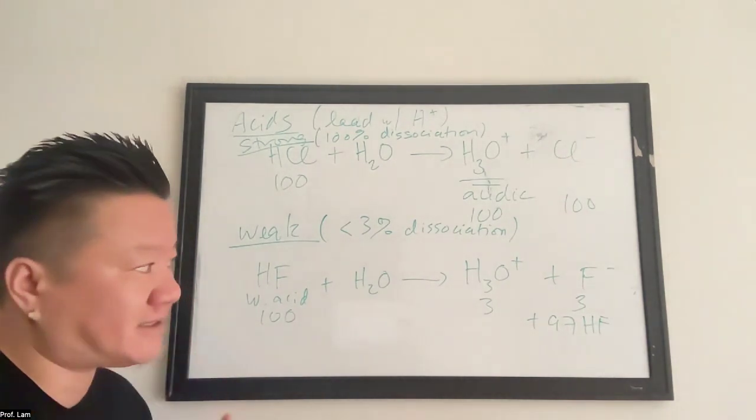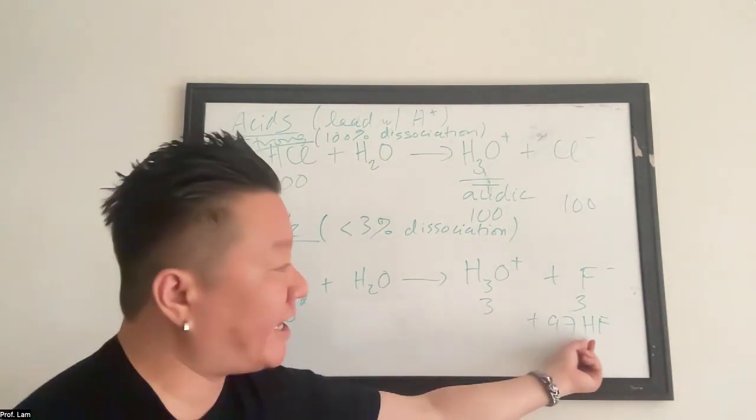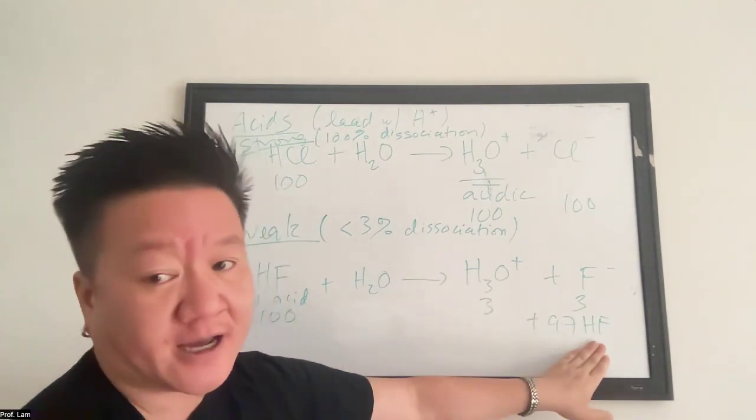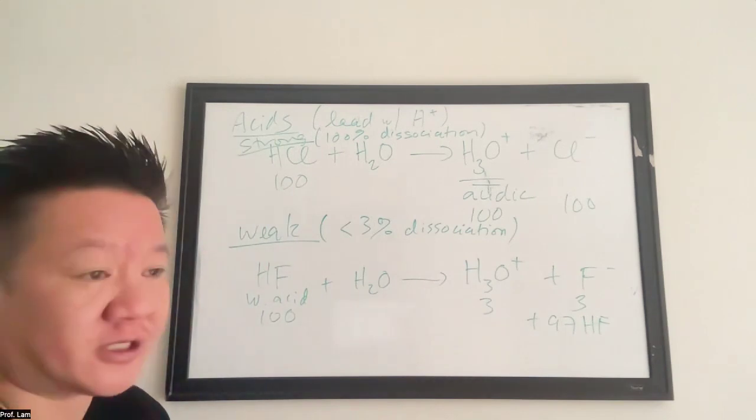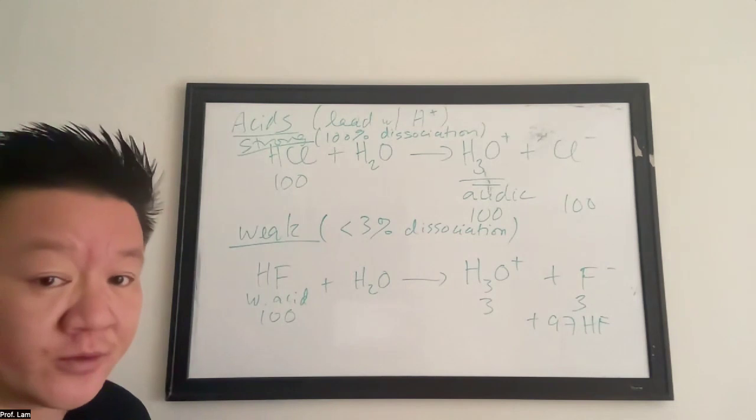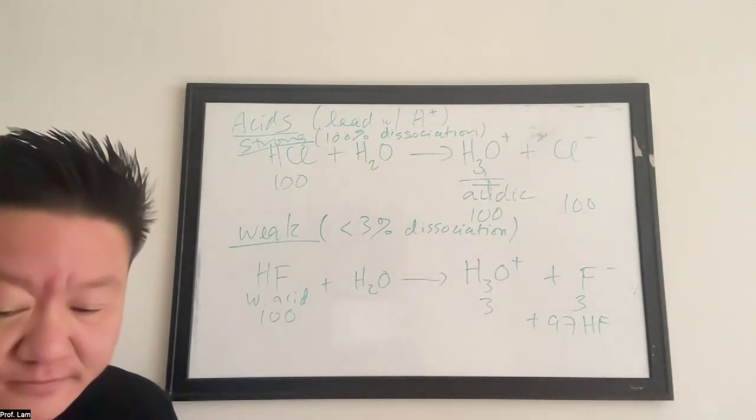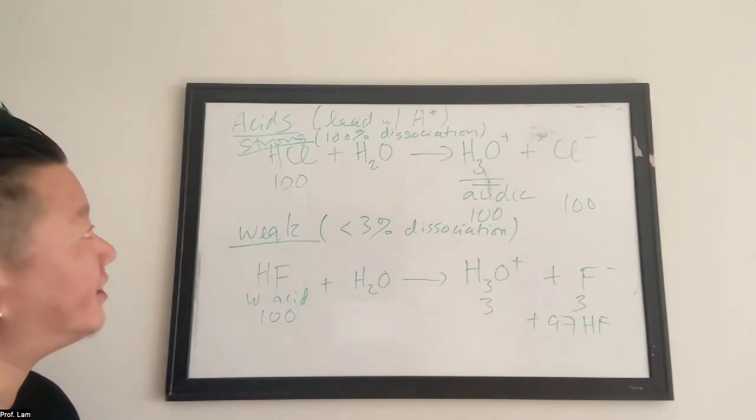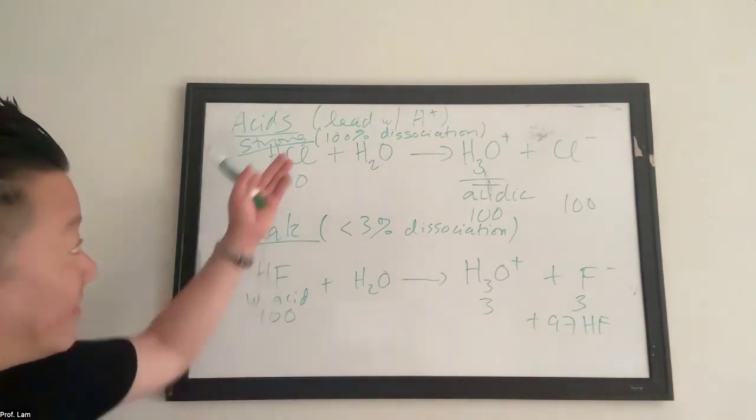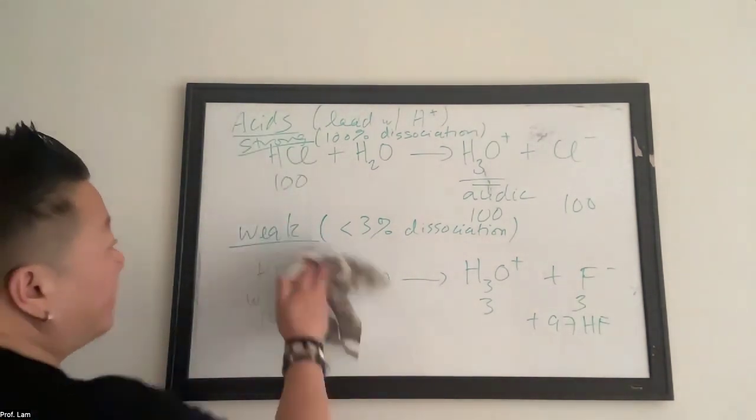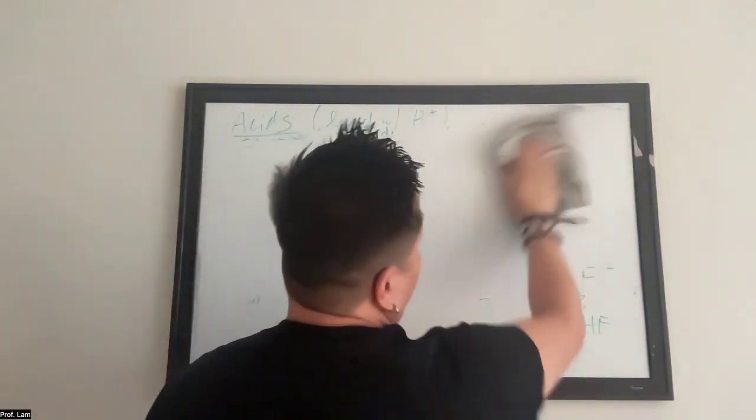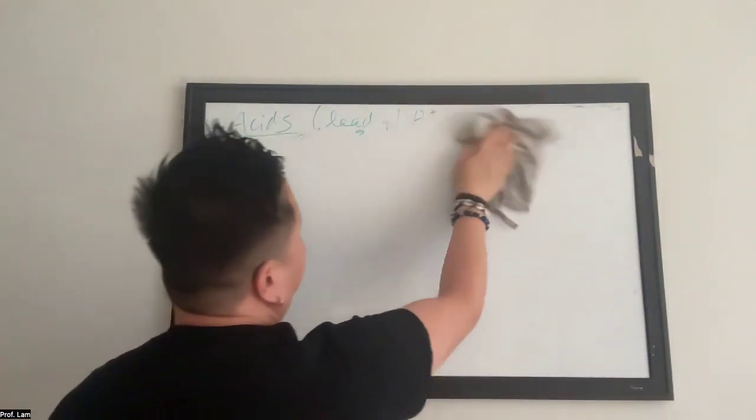A solution is not considered acidic until the H plus gets released. So if it's still intact, then it's not contributing to the acidity of the solution. And so that's why it's considered a weak acid. So now that you guys know the definition and also what is a strong and a weak acid, what it means, it's about percent dissociation. We're going to go in and learn how to tell which acids and which bases are strong and weak.